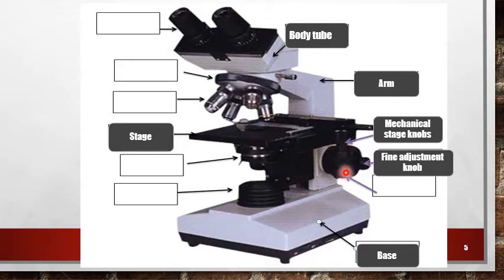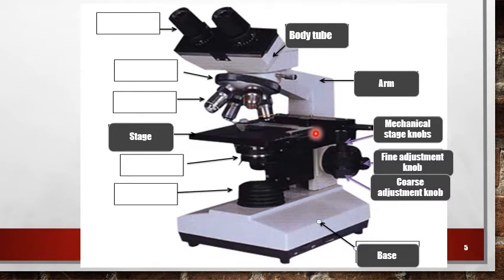Focus adjustment knobs: there are two knobs, fine adjustment knob and coarse adjustment knob. They are used to change the distance between the object or slide on one side and objective on the other side, for the purpose of clearing the image.